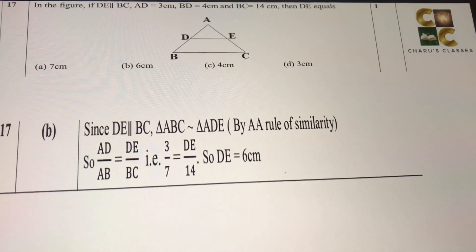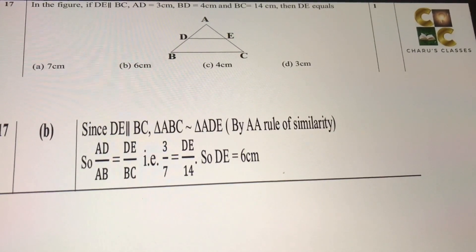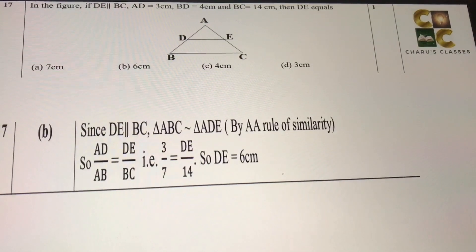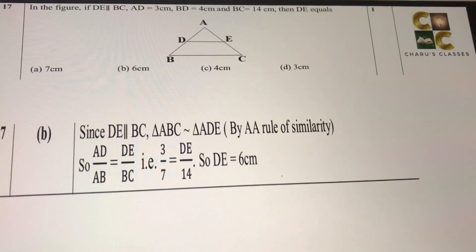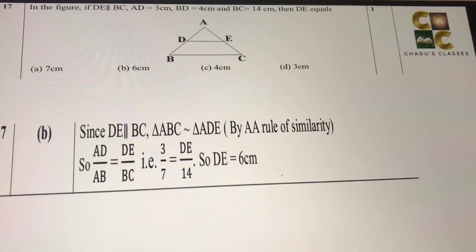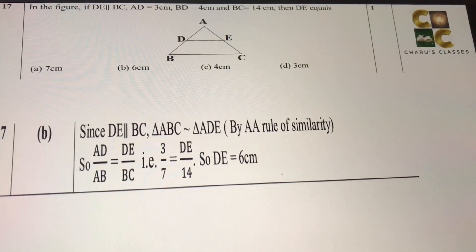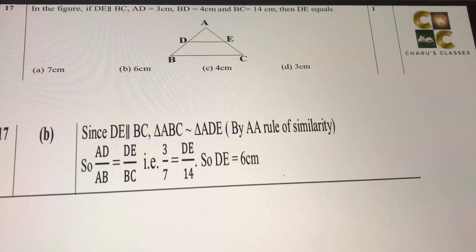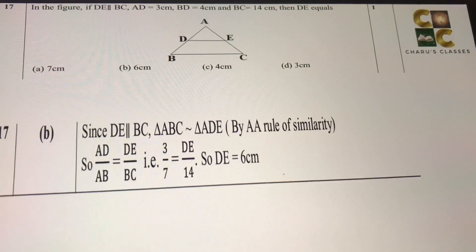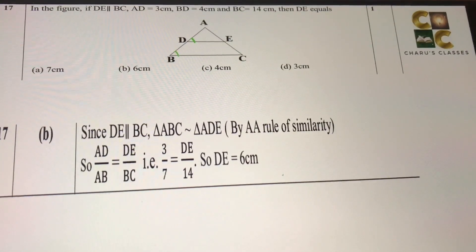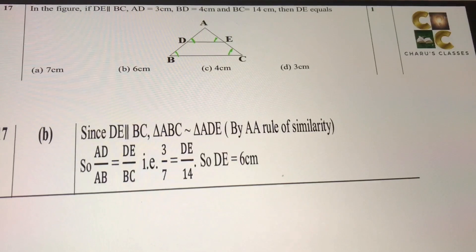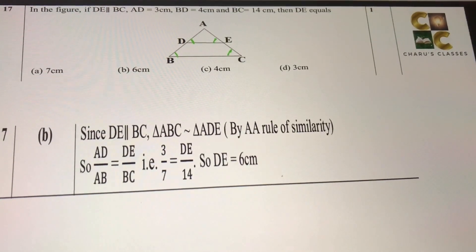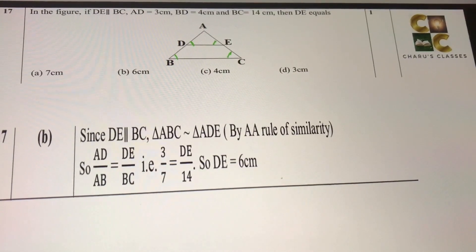17th: in this figure, DE is parallel to BC, AD is 3 cm, BD is 4 cm, BC is 14, then DE is equal to. If we take triangle ADE and triangle ABC, using AA similarity, we get the two triangles to be similar. Because DE is parallel to BC, the corresponding angles here, they are going to be equal. So using AA similarity, we can say that the two triangles are similar. So their corresponding sides will be in ratio.